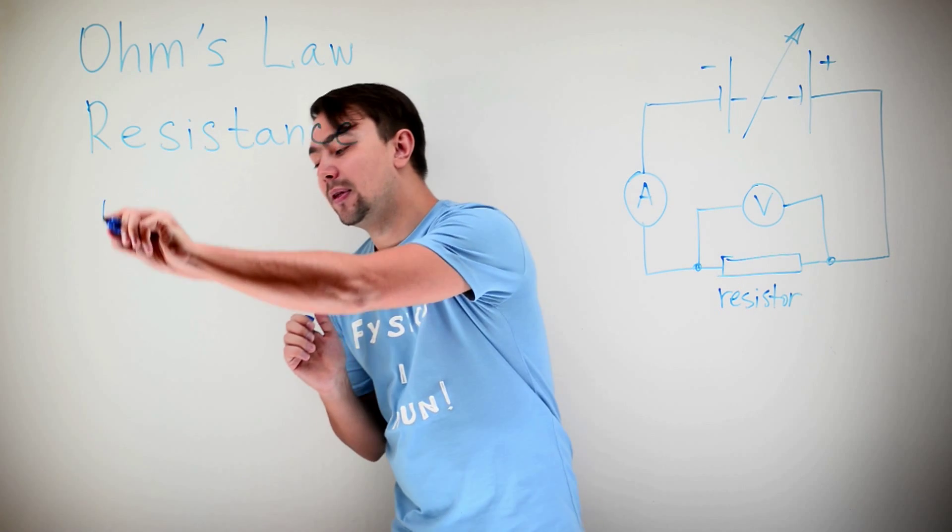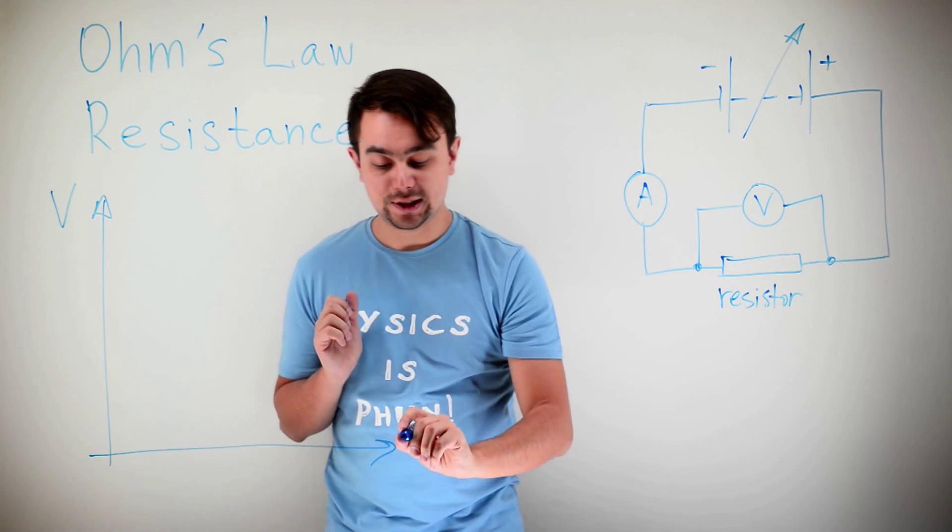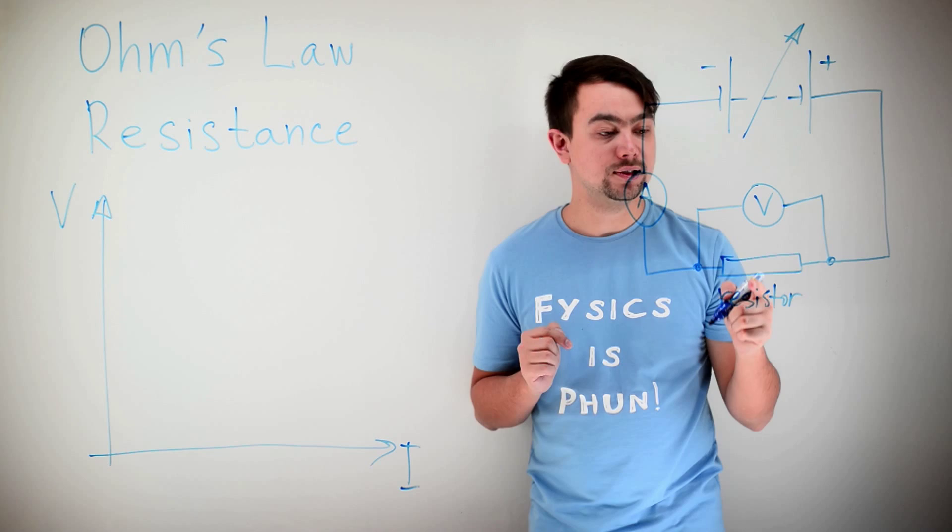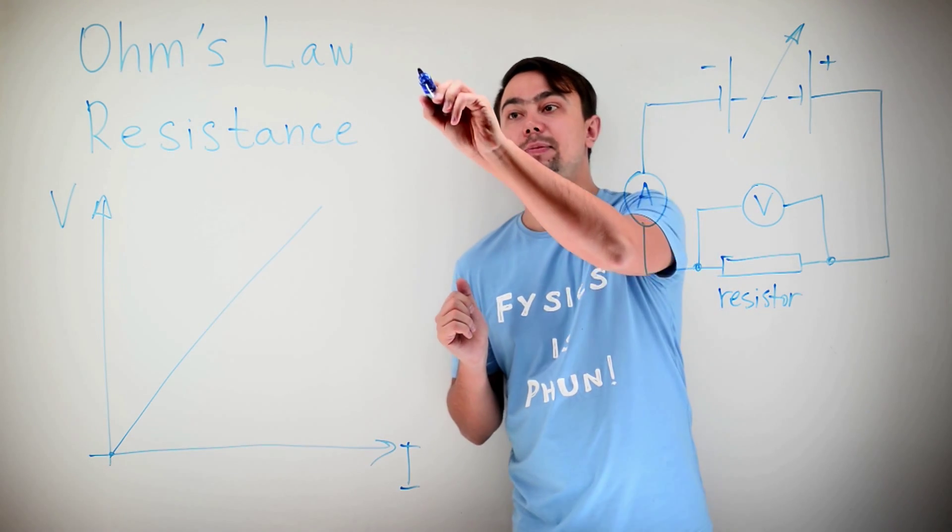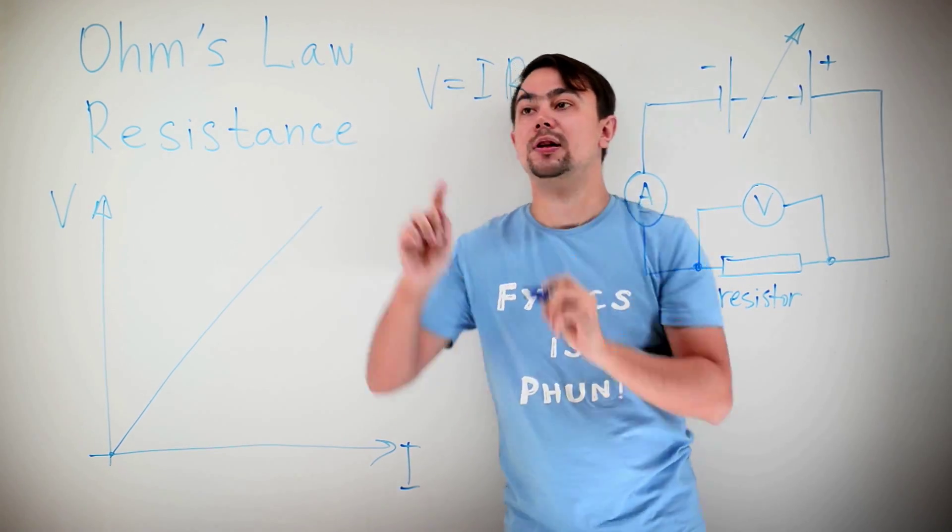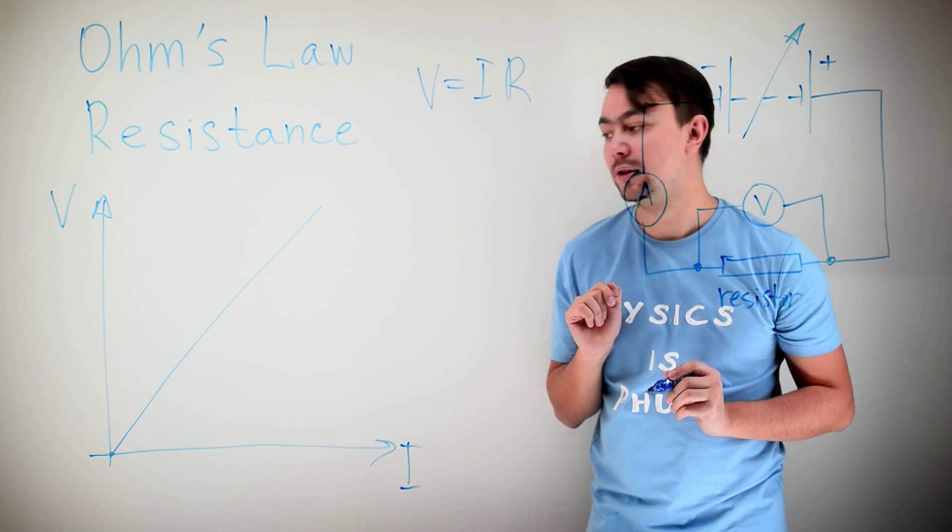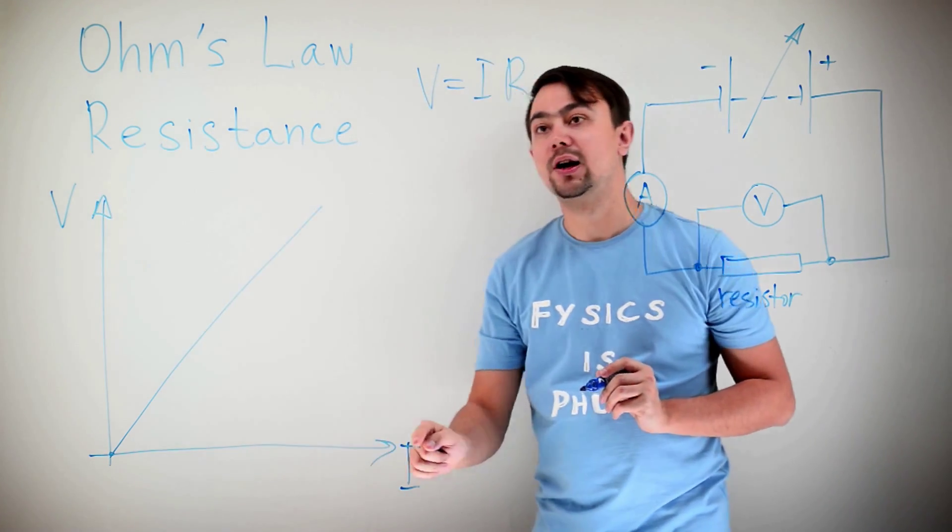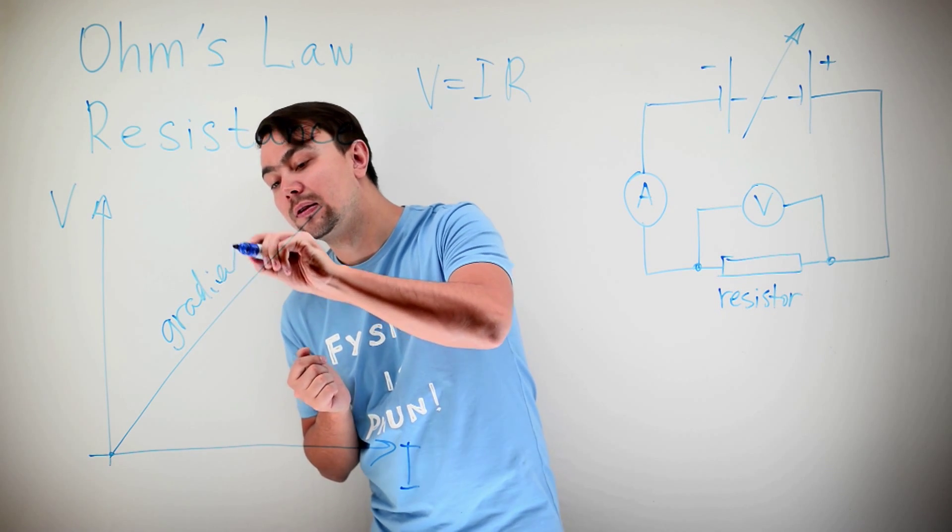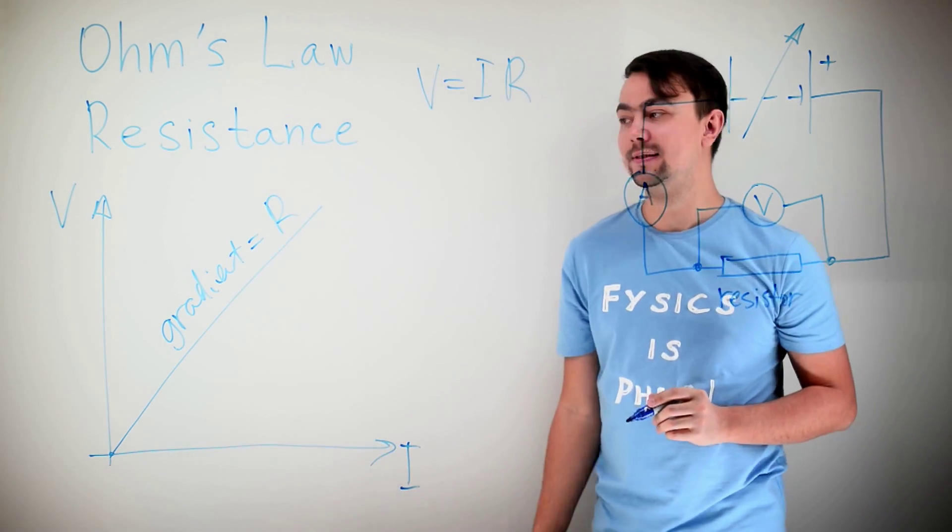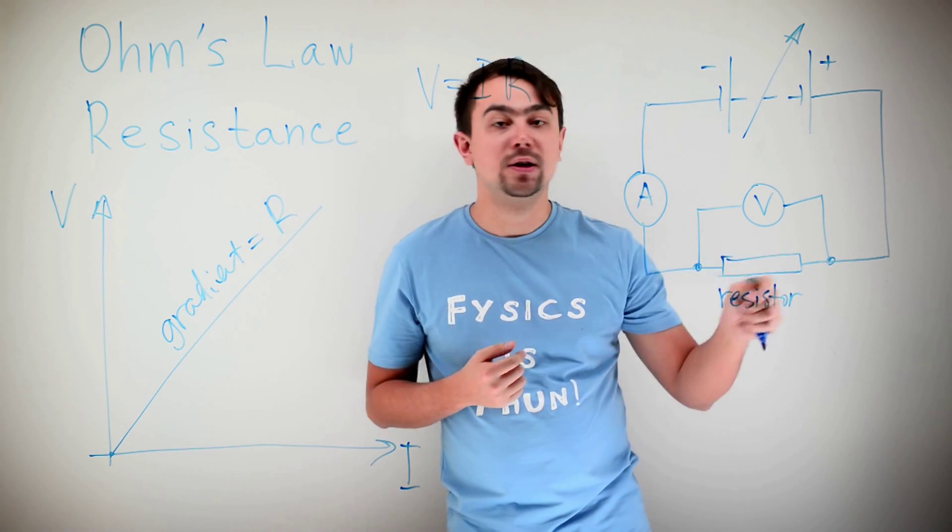If we build a graph of voltage versus current, for this resistor it would look like this. That is because V equals IR. Voltage is proportional to the current, given that the resistance is constant. So voltage equals IR. We can simply say that the gradient of this graph is equal to resistance. This is a simple technique to determine the resistance of a resistor.